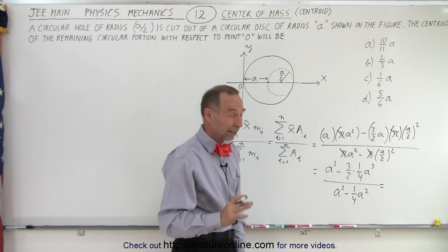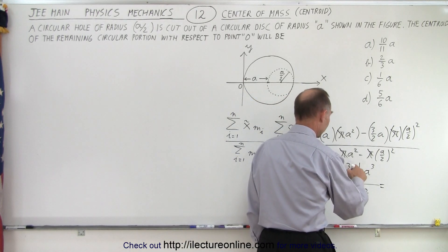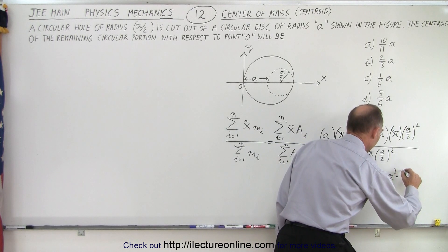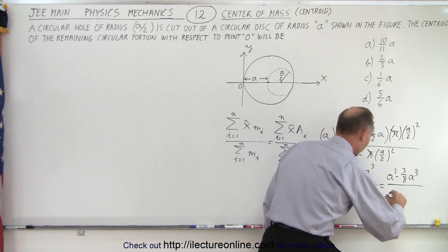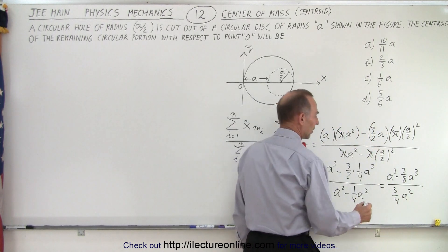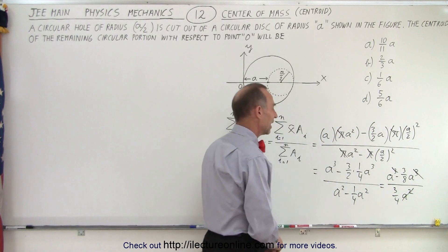We can simplify that a little bit more. So we have a cubed minus, notice that's three over eight. So it would be a cubed minus three over eight a cubed, divided by a squared minus a quarter a squared, which is three quarters a squared. And the a squared will cancel out with the cubes. So we just have an a in the numerator.